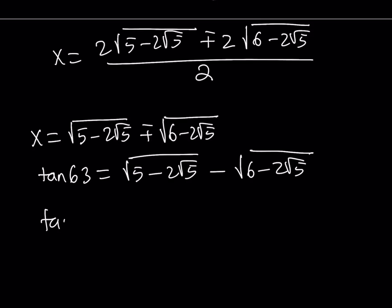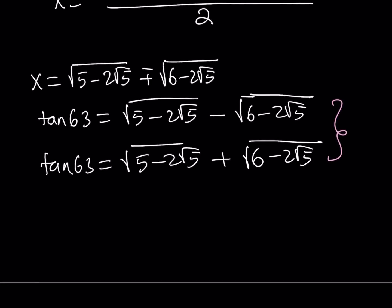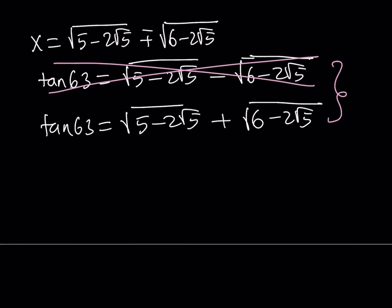Or this. So, we get two values for tangent 63, but notice that this one gives us a negative answer, right? Because the square root of 6 minus 2 root 5 is obviously greater. So, we're going to go with the second solution, which is positive, and we can simplify this.